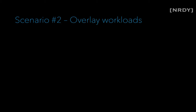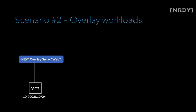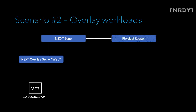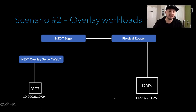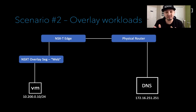Scenario number two is where we have a VM on an overlay network. It looks mostly the same — we have a VM with an IP connected to an overlay segment, we'll name it 'web', and that routes up to an NSX-T Edge VM, then hits a physical network with a DNS server on the other side. This is basically the same as the first scenario. The only difference is that we're routing through a distributed router and through our NSX-T Edge. We just need to make sure we can route from this IP over to the DNS server and back. No special DNS configuration required — this is just IP routing.